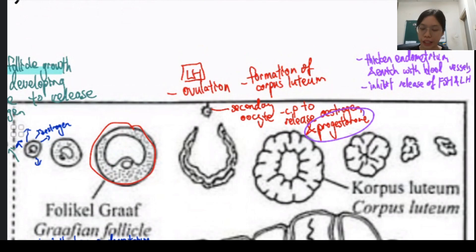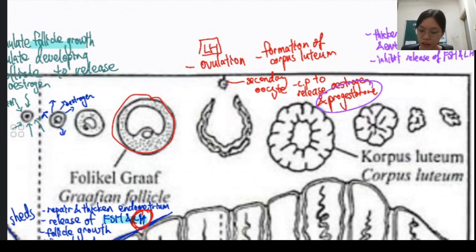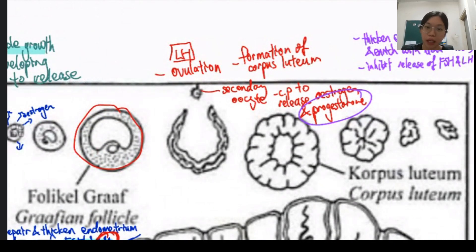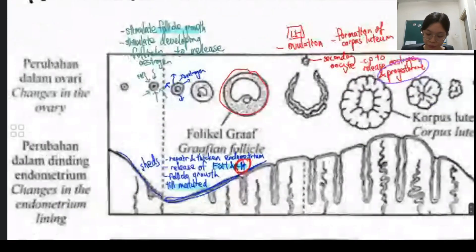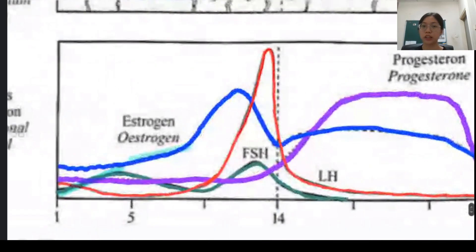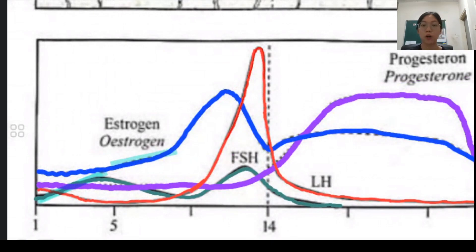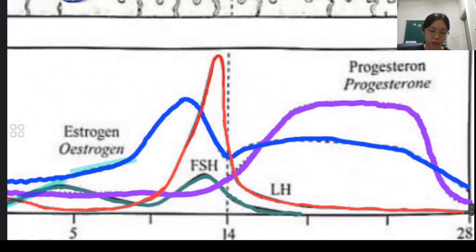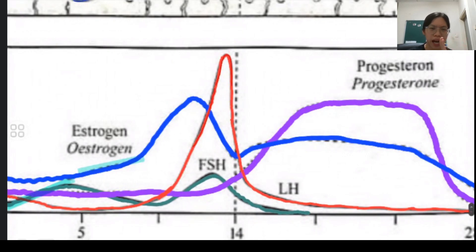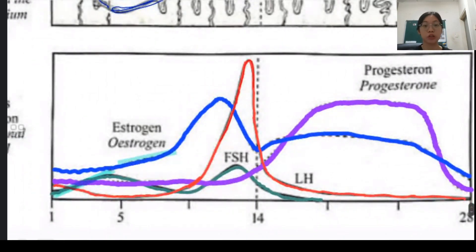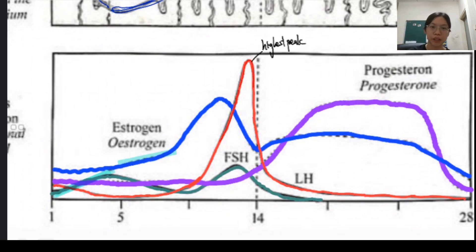Progesterone's main function is to thicken the endometrium and enrich it with blood vessels. It also inhibits the release of FSH and LH because it doesn't want follicle growth or ovulation to occur — if fertilization has happened, they only want one embryo to implant. Looking at the graph to identify hormones: LH has the most obviously spiking peak — super high and sharp — normally at the middle around day 14.